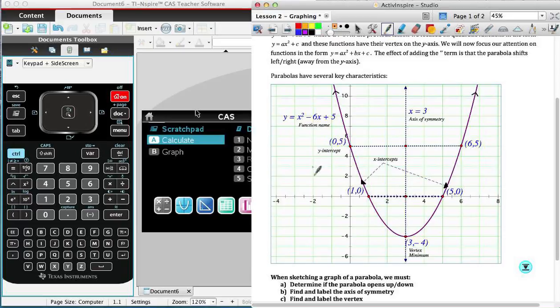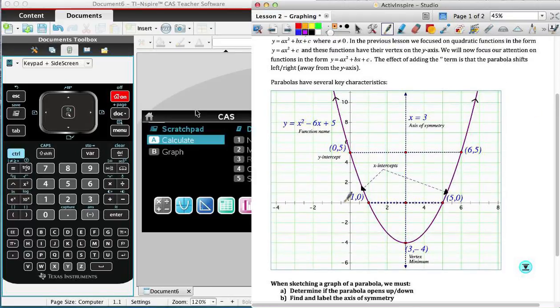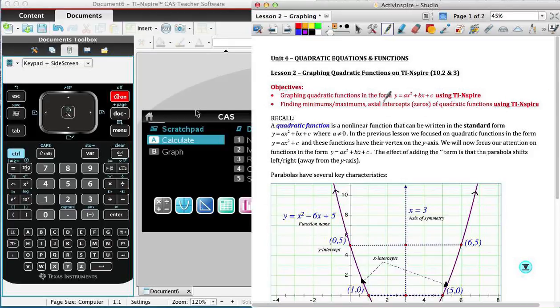And all of the parabolas we focused on were centered right around the origin. So they had their turning points or their vertices right around the origin, which is where the x and the y axes intersect at 0, 0. And so what we're going to do now is focus on equations of parabolas that have a bx term, they have this middle term. And what that does is it causes the turning point of the parabola to shift away from the y axis.